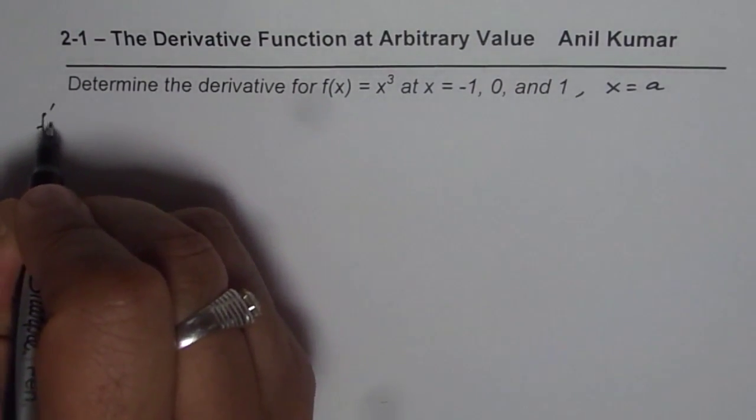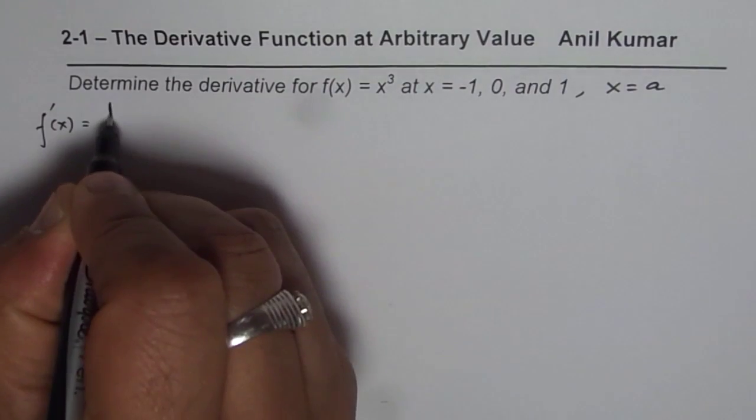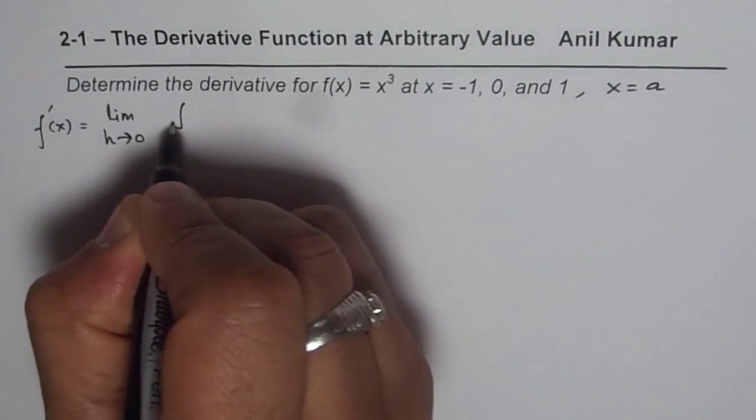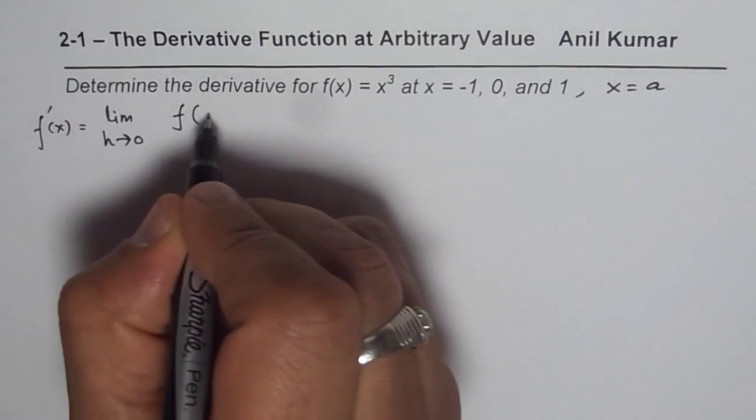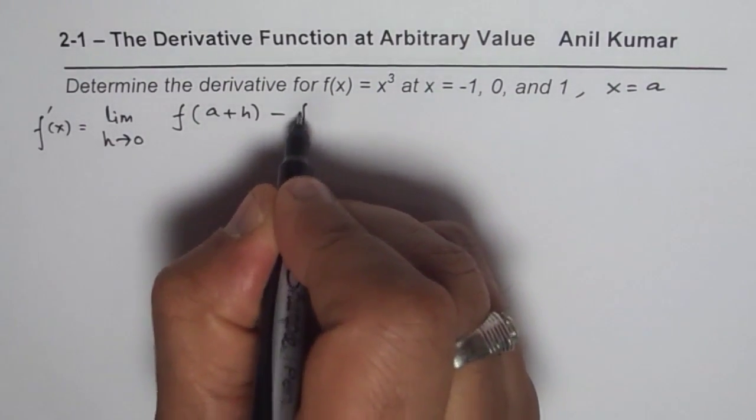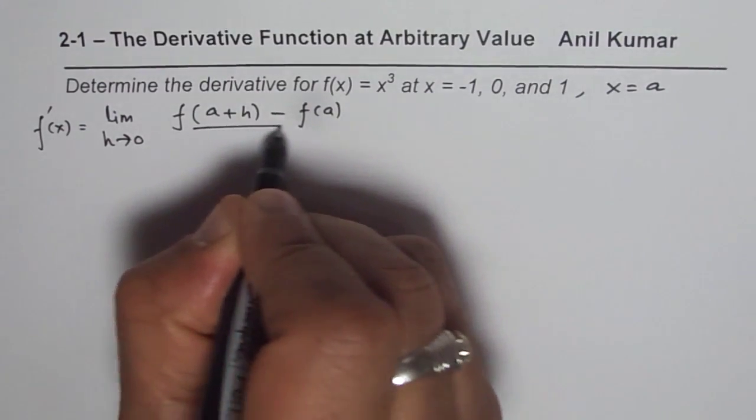So going with the definition of derivative: f'(a) = lim as h→0 of [f(a+h) - f(a)]/h. So that is how we are going to do.